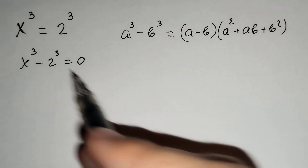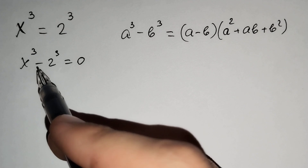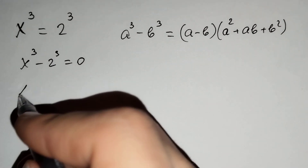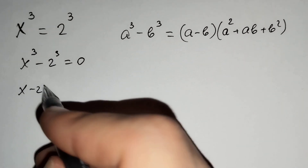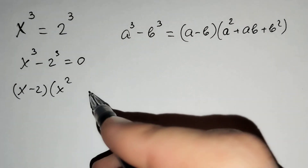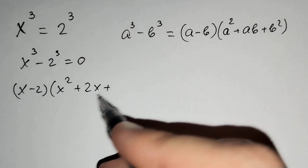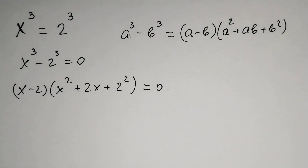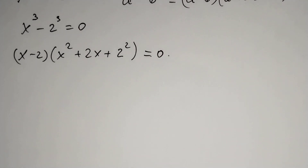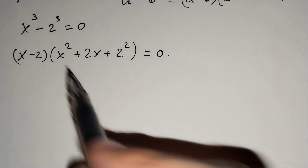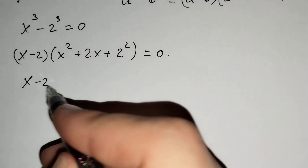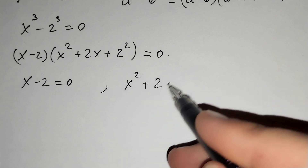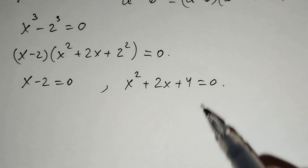Using this formula, x power 3 minus 2 power 3 equals to x minus 2 times x squared plus 2x plus 2 squared equals to 0. And from this equation, x minus 2 equals to 0 and x squared plus 2x plus 4 equals to 0.